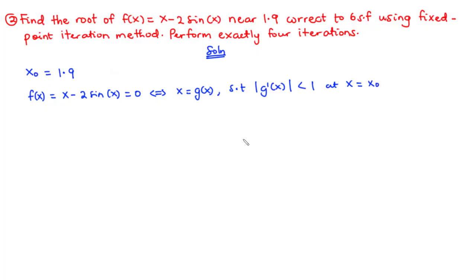In this case, xₙ is going to converge to the root or the approximated root of the given equation. So how do we transform f(x) = 0 into x = g(x)? We can have various forms of x = g(x); however, this condition needs to be satisfied at x = x₀.